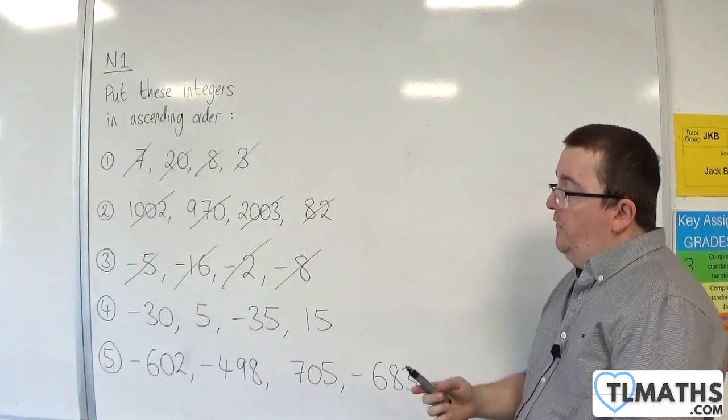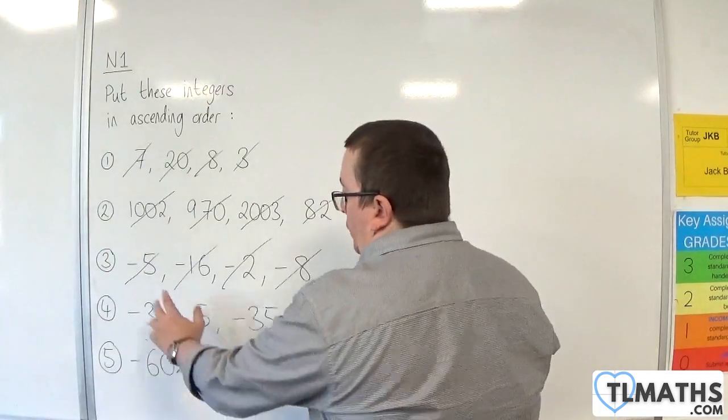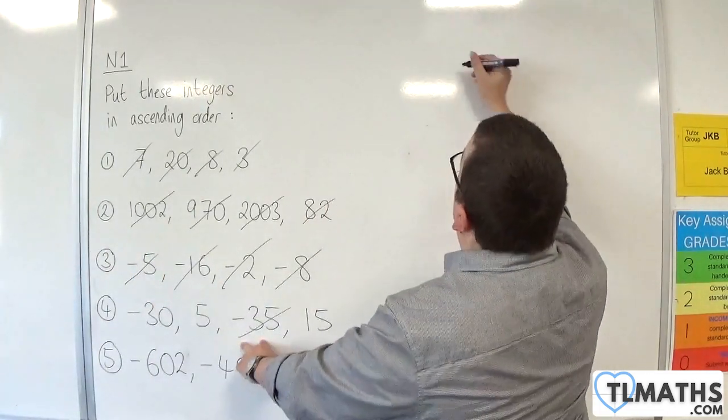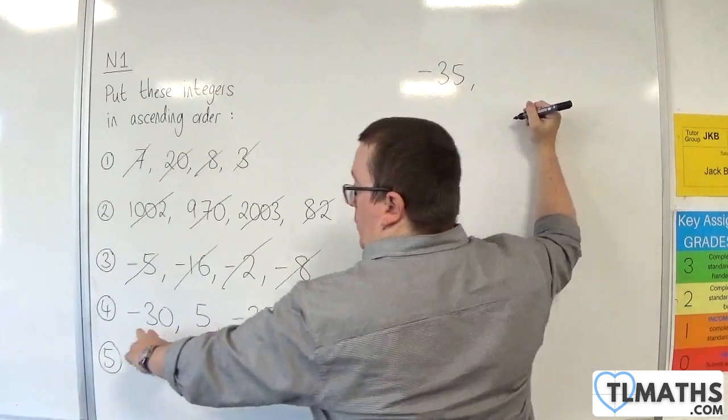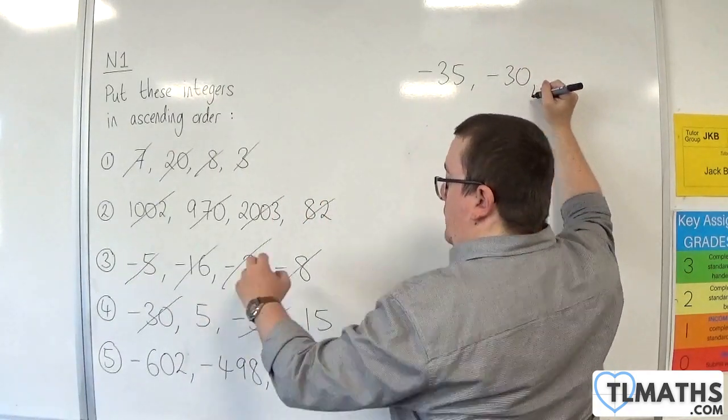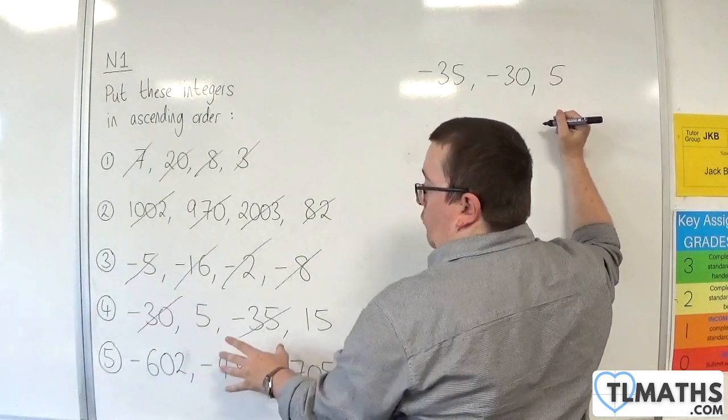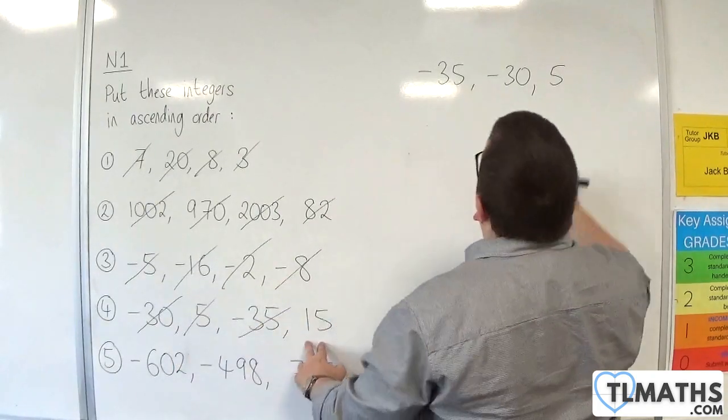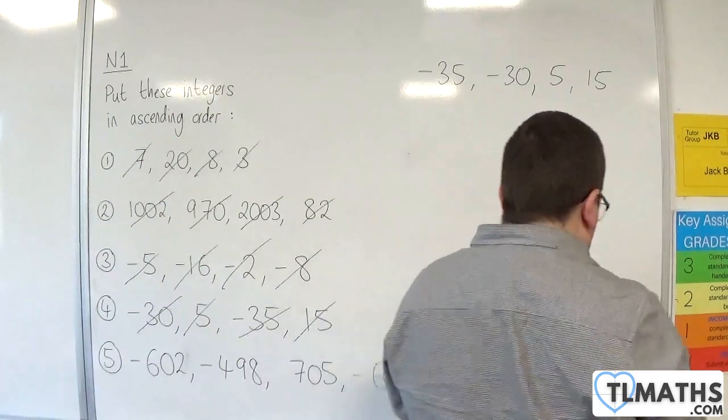For number 4, we've got a mixture of positive and negative integers. The most negative is minus 35, so that's going to go first, then minus 30, then 5. Once we've got rid of all the negative numbers, we just go to the smallest number we've got, 5, and then 15.